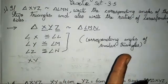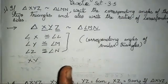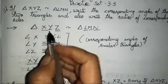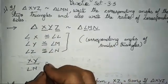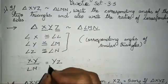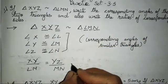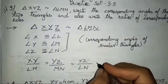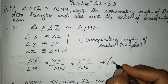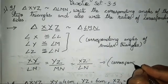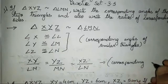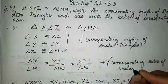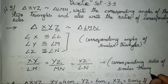We have to write the corresponding sides also — they have asked us for angles as well as sides with their ratios. So XY upon LM, then YZ upon MN, and XZ upon LN. You all have to follow the sequence, and the reason for this is that these are corresponding sides of similar triangles. That's it, this much only you all have to solve for this question.